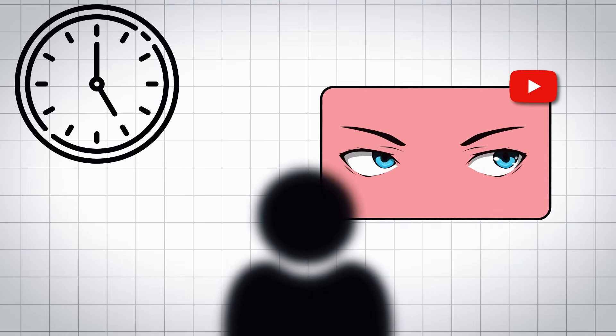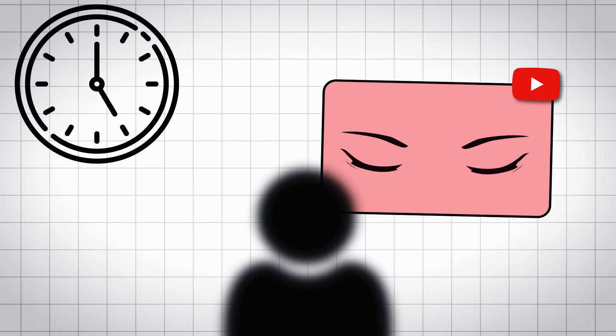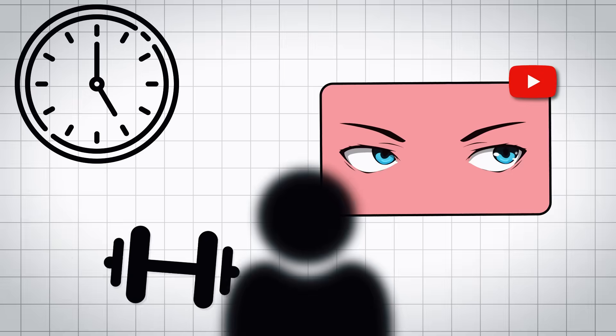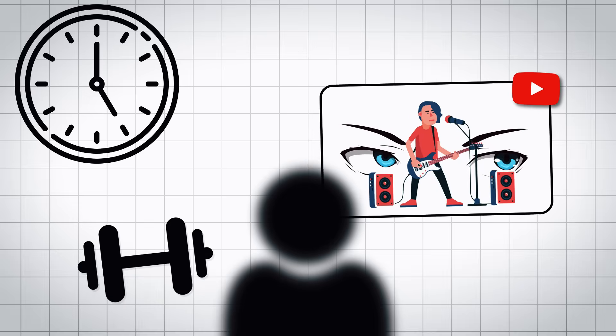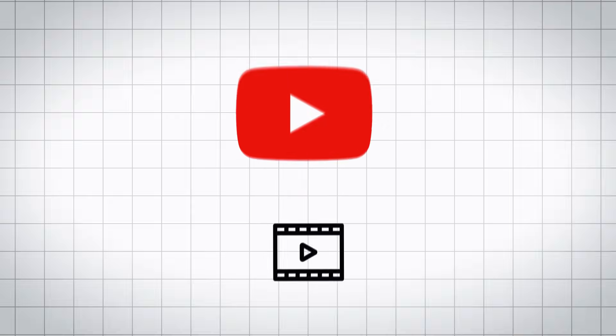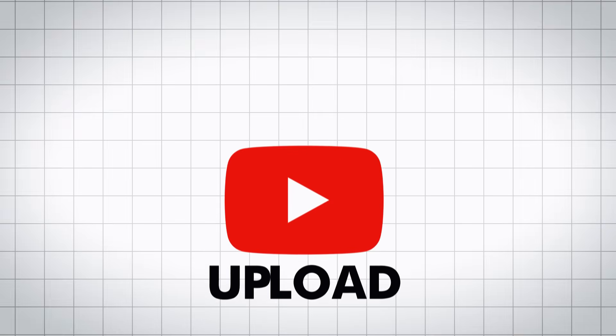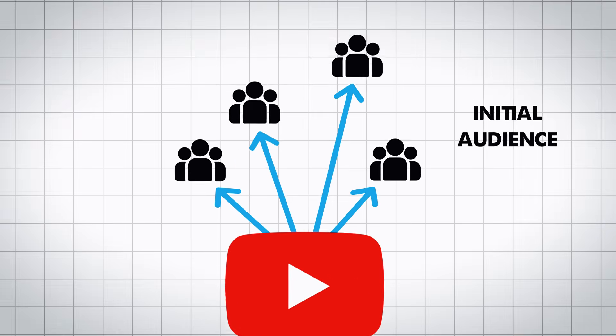Now we've got all this data. The YouTube algorithm has figured out what time of day you like to watch a certain anime collection, or what kind of music you want to listen to when you're in the gym. So how does all of this come back to the YouTube algorithm and its suggestions?